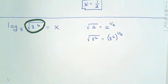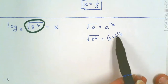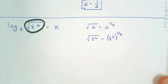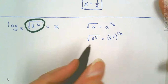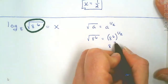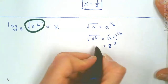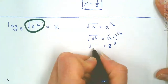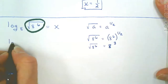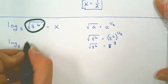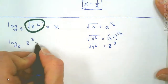When we look at the square root of 8 to the 6th power, we can rewrite that as 8 to the 6th power with a 1/2 outside, because square roots are a half power. Now, those exponents are multiplying: 6 times 1/2 is 3. So that's going to be 8 to the 3rd power. We can replace that square root of 8 to the 6th with 8 to the 3rd power, because that's what it equals.